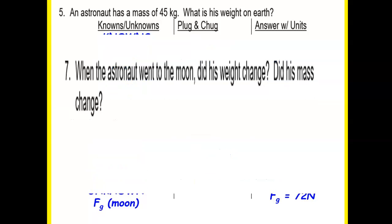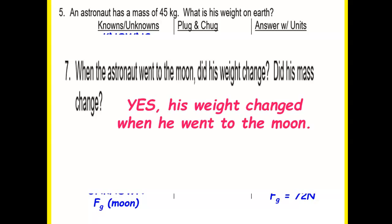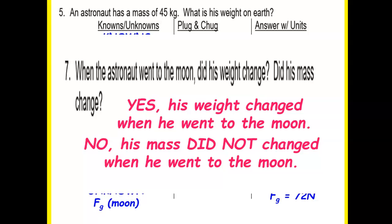So the question on your sheet says, when the astronaut went to the moon, did his weight change? Well, of course, when we look at our calculations, we see that, yes, it did change. But his mass did not change because mass is the amount of matter that an object has.